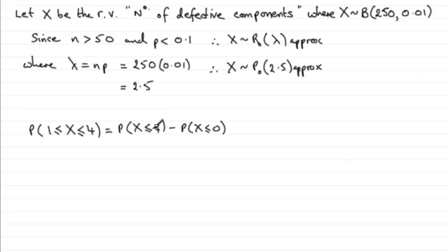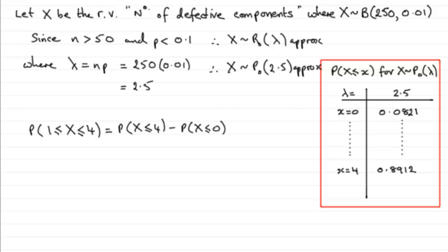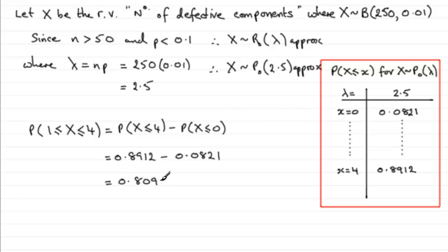To work these out, we can use the cumulative Poisson probability tables and look up these two values. Looking at the extract from those tables, the probability that X is less than or equal to 4 is 0.8912 — look in the tables where lambda is 2.5 and X equals 4. Then look across for X equals 0 and you get 0.0821. Subtracting those two values gives 0.8091, which to three decimal places is 0.809.